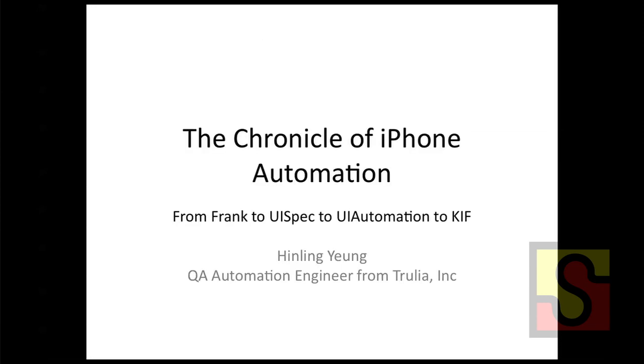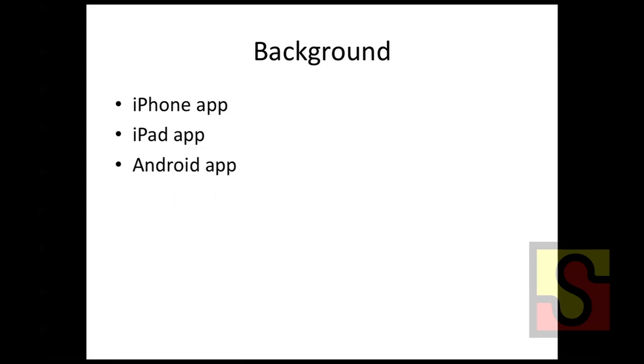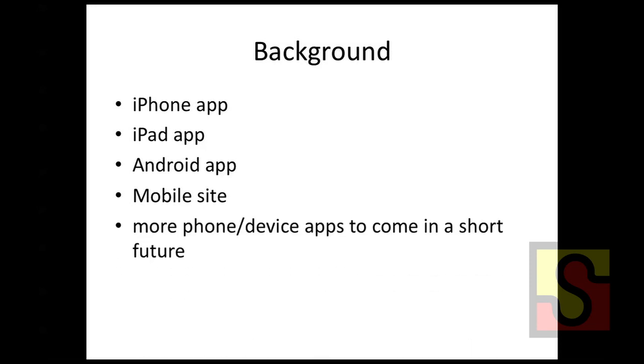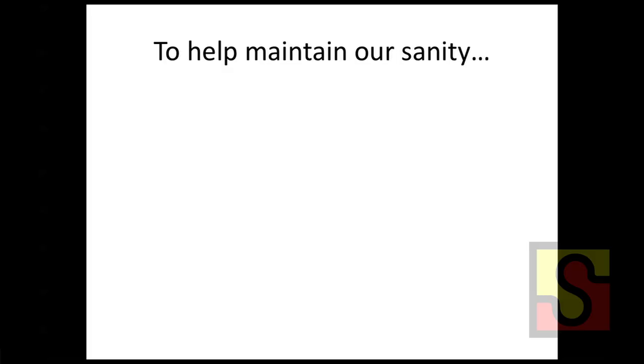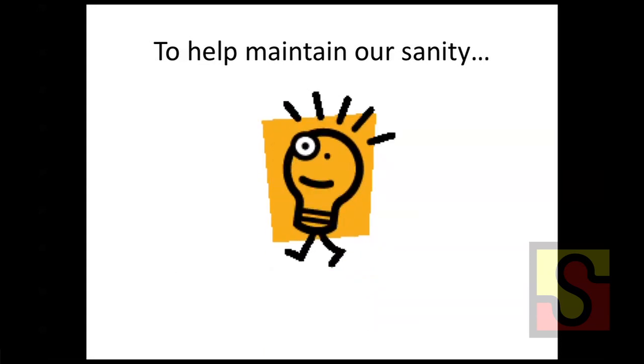So, background: why do we need automation for the device? We have a lot of different apps coming. For Trulia, we have an iPhone app, an iPad app, an Android app — actually there's another one, an Android tablet coming also. And then the mobile site itself for people who don't use Android or iPhone. More phone devices are coming in a very short time and our mobile traffic keeps increasing. So what do we do to solve this problem?